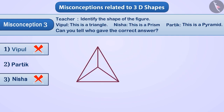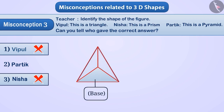If we look at all the faces, they are all triangular. If we consider one face as the base, all the other faces are also triangular. We call such a shape a pyramid. Therefore, Pratik gave the correct answer — option 2 is correct.